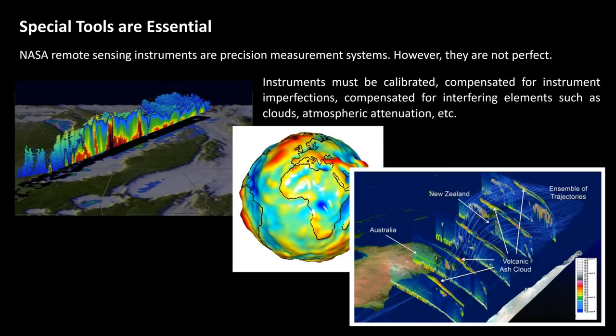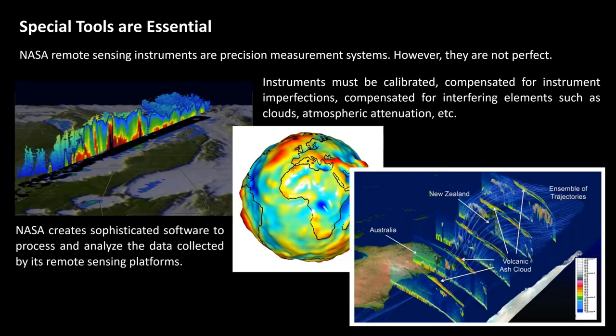Each of the instruments must be calibrated. They must be compensated for their various imperfections and compensated for any interfering elements such as clouds or atmospheric attenuation. So if you're studying the atmosphere, the ocean, or vegetation on land, there are a variety of confounding variables that you really need to have a strategy to deal with. As a result, NASA's science teams create very sophisticated software and processes to analyze the data collected by their respective remote sensing platforms.